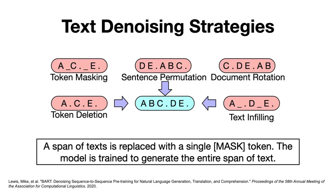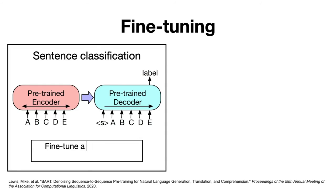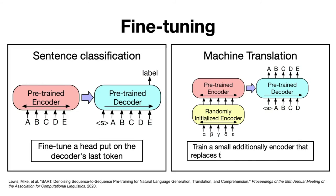This is a more challenging task than token masking and helps the model generate coherent and contextually relevant text. Now let's talk about how BART can be fine-tuned for specific NLP tasks. For instance, to perform sentence classification, BART can be fine-tuned to predict a label for a given sentence by putting a fine-tuned head at the end of the decoder. Also, when it comes to text generation, this is where BART really shines because its encoder-decoder architecture makes it perfect for tasks like summarization and machine translation, which are two tasks where both BERT and GPT struggle.